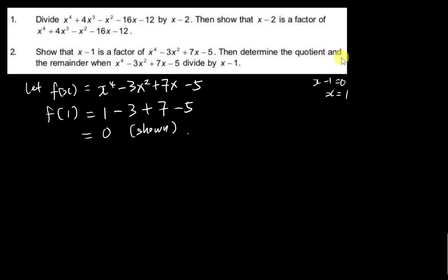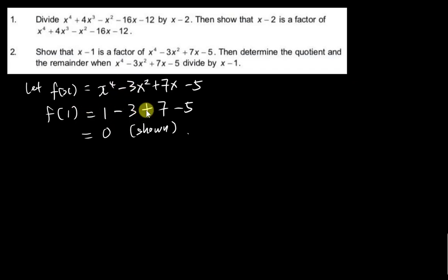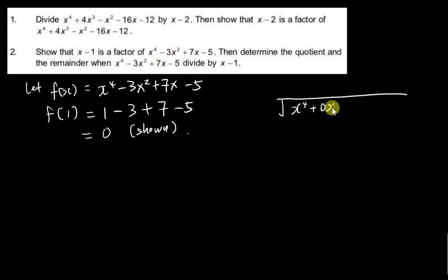Next, determine the quotient and remainder when this equation is divided by (x minus 1). I do a long division. Note that the polynomial x to the power of 4 minus 3x squared plus 7x minus 5 is missing the x cubed term, so I add 0x cubed myself. This is important: if any power is missing in the polynomial, you must add a zero placeholder; otherwise the long division will go wrong. I divide by (x minus 1).